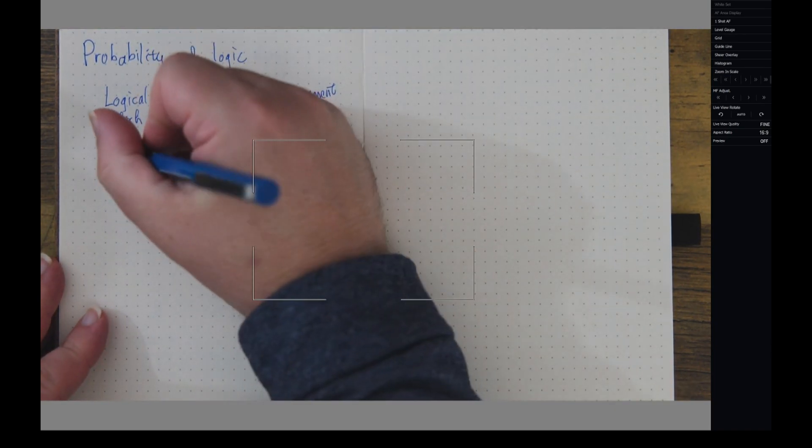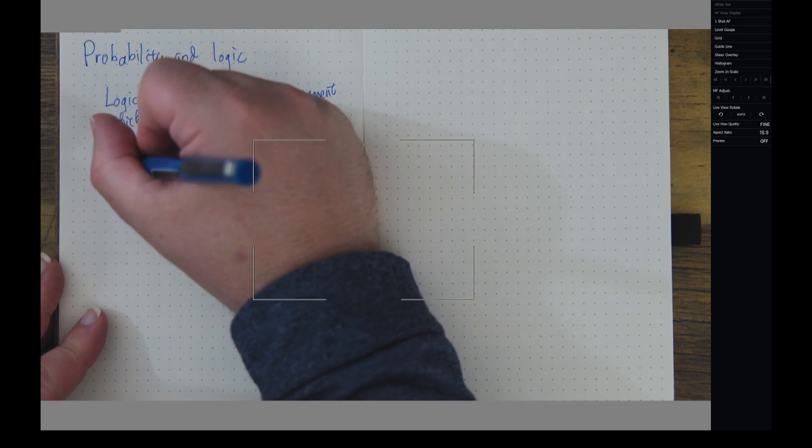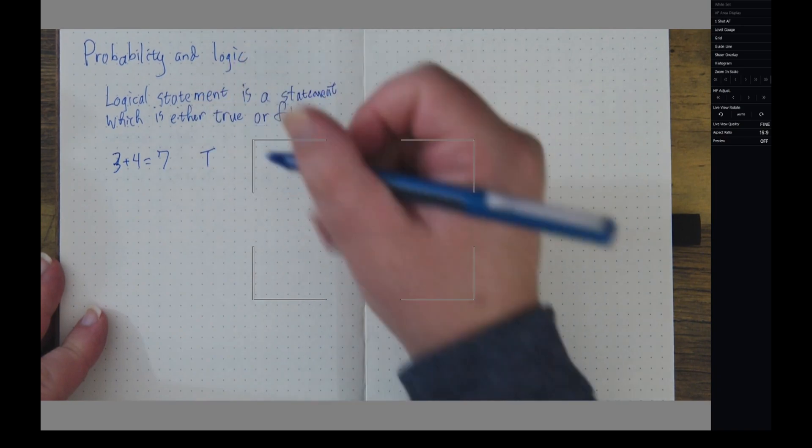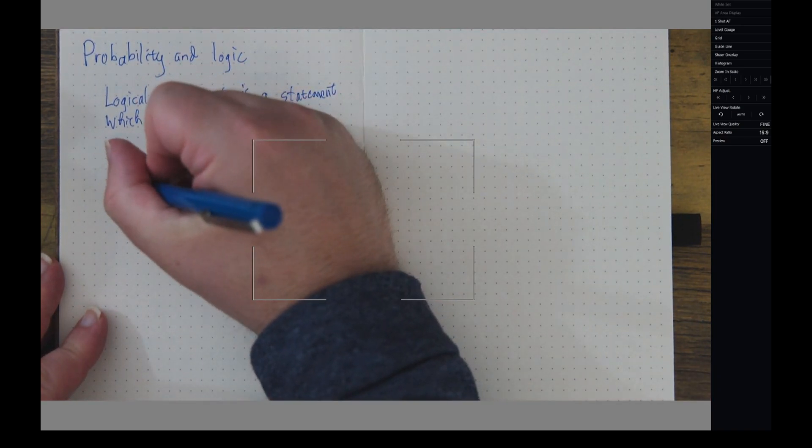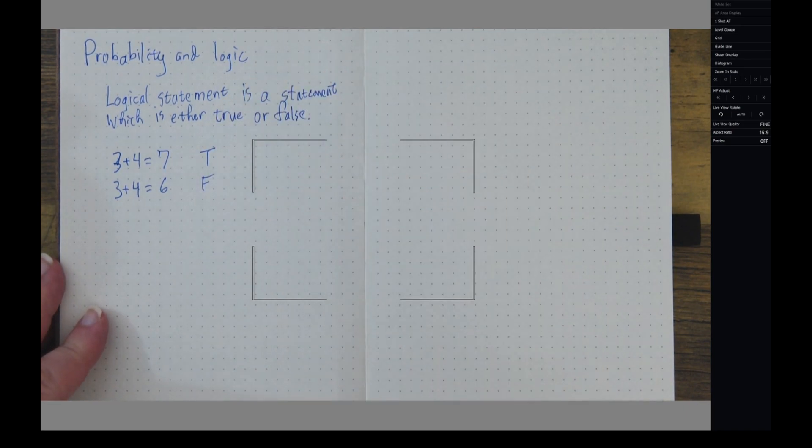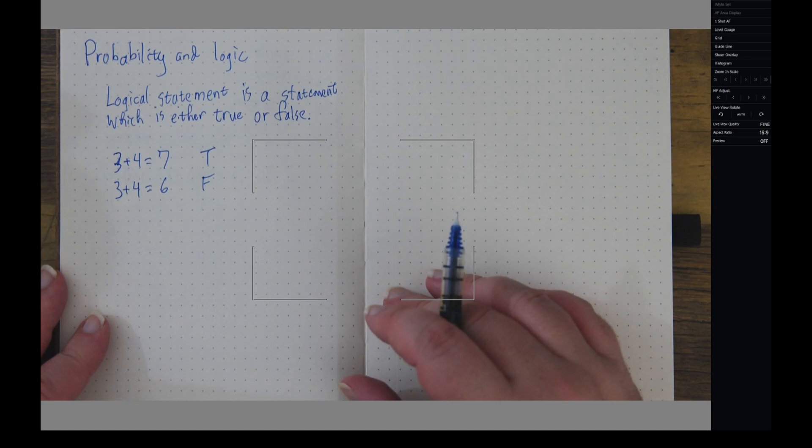So for example, I might say that 3 plus 4 equals 7. That's going to be true. But if I said 3 plus 4 equals 6, that's a false statement. So those are both examples of logical statements.